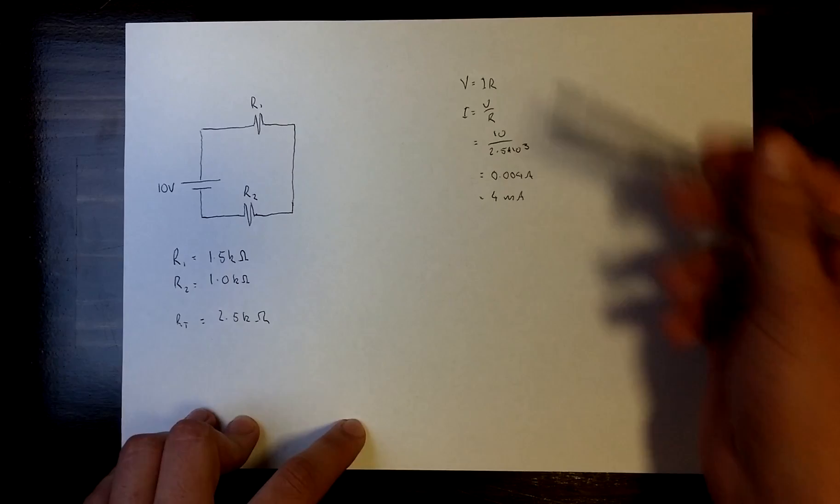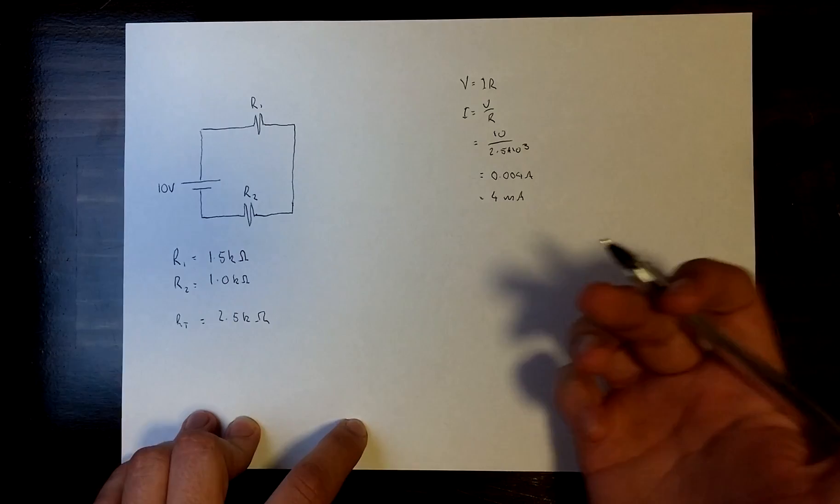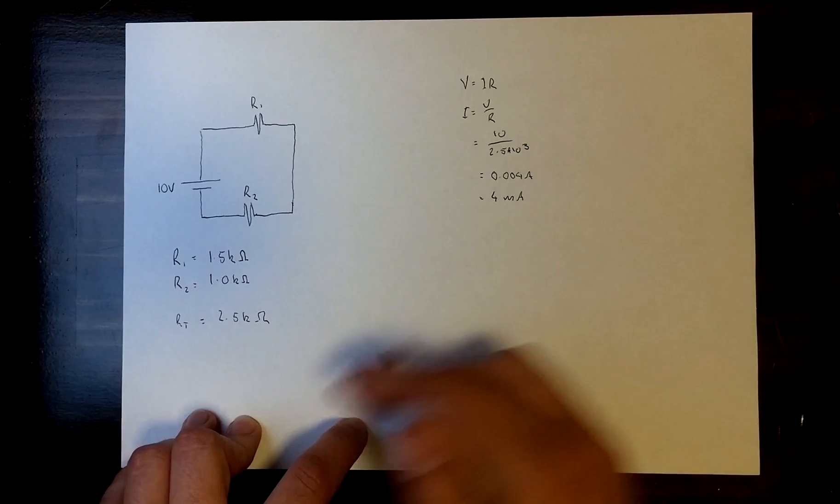As you can see, it's quite easy to find one of these elements if we only know two of them. From this we can work out the voltage across one of these resistors.